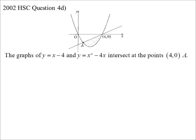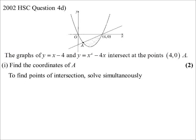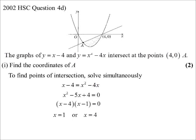Part (a): find the coordinates of A for two marks. We solve simultaneously: x minus 4 equals x squared minus 4x. Rearranging gives a quadratic; we already know one solution is x equals 4, which makes factorizing easy. We get (x minus 4)(x minus 1), so x equals 1. The y-value is 1 minus 3, so A has coordinates... the x-value of 1 is what we'll really need to find the area.